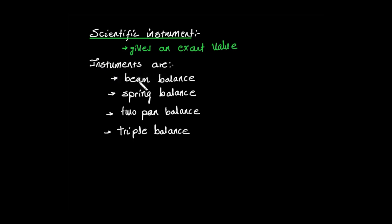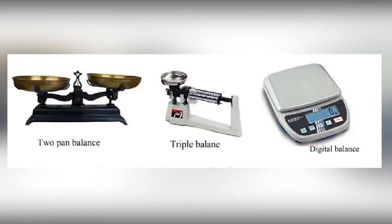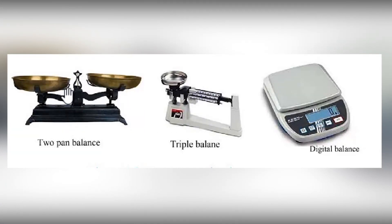Scientific instruments used to measure mass include the beam balance, spring balance, two-pan balance, and the top-pan balance. This is the triple beam balance. These are the two-pan balance instruments. This is a laboratory balance.